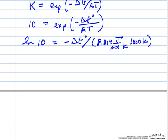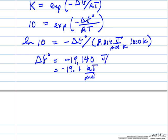So if we solve this for Gibbs free energy change at 1000 Kelvin, 19,140, which we would write as 19.1 kilojoules per mole, because this was joules per mole. And that's the first part of the problem.